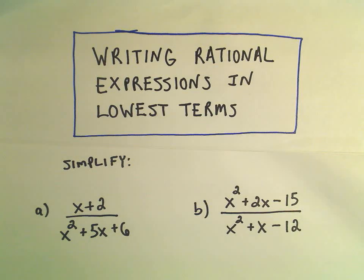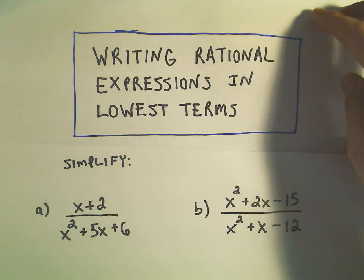Okay, in this video I just want to do a couple examples of writing rational expressions in lowest terms and the idea is basically just to factor and cancel any common factors.